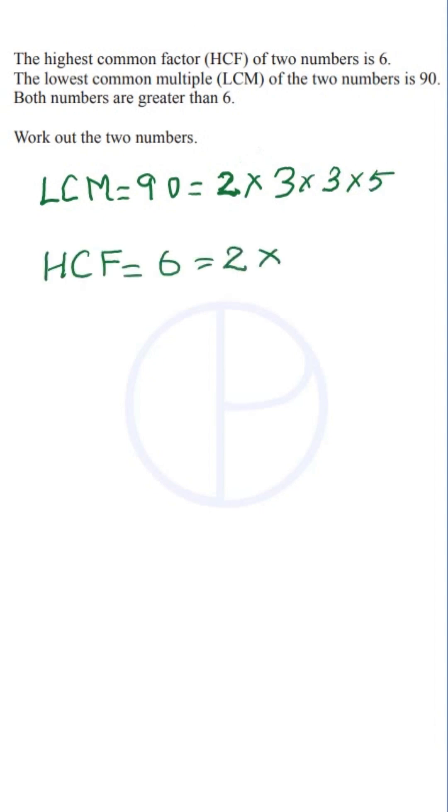The HCF is 6 which can be written as 2 times 3. Let a and b be the two numbers. The HCF is the largest common factor between the two numbers, so 6 is a common factor of both a and b. So both a and b will have 6.